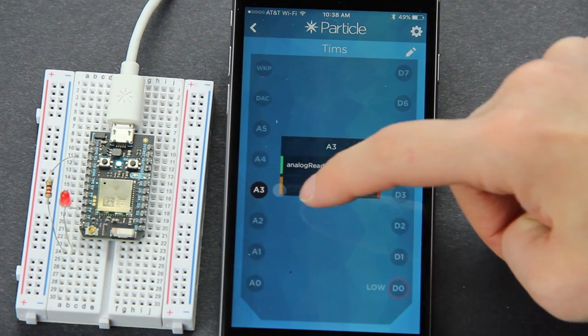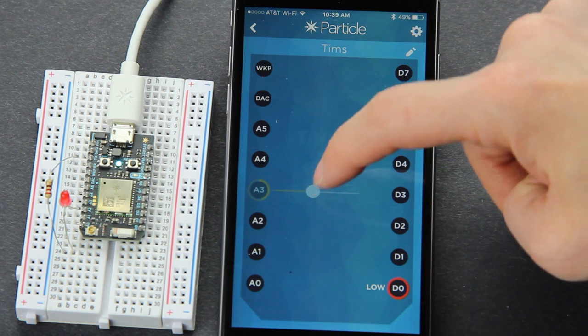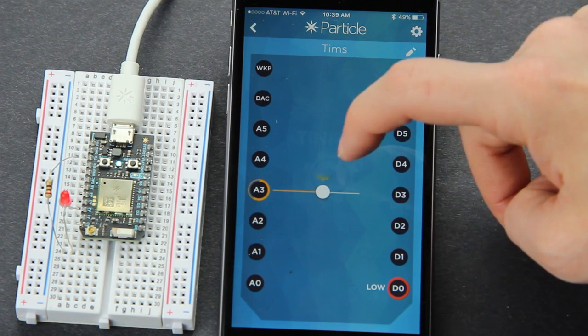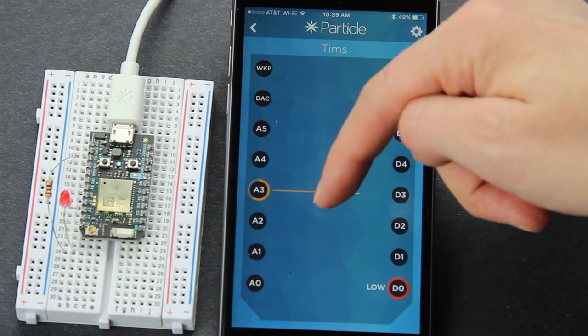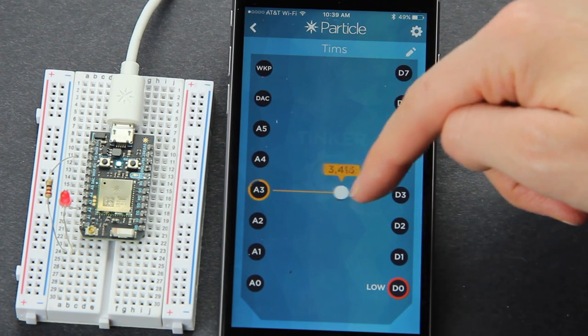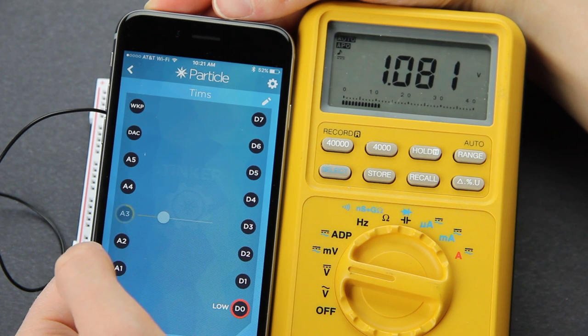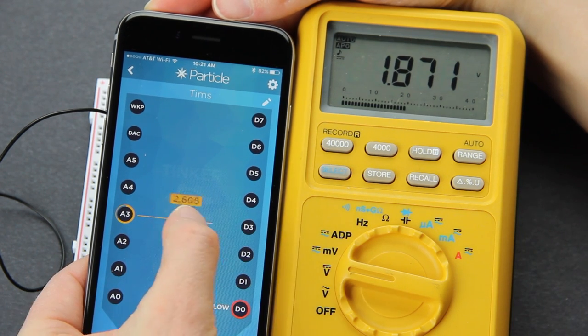If we change this pin to analog write, we can alter the brightness of the LED. As we slide the values up and down, the LED needs a certain voltage to turn on, and then it can slowly increase its brightness. If we hook up a multimeter again, we can gradually change the voltage output from this pin.